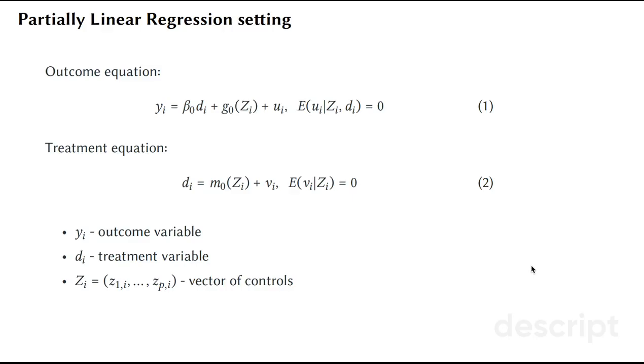We look at it as a setting where you have a partially linear regression, where you have an outcome equation, where the treatment effect enters linearly, but all the rest can be very non-linear with respect to control variables. We are interested in parameter beta0, which have an average treatment effect interpretation,